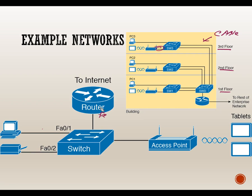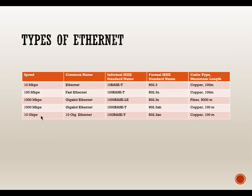We're connecting various devices: a wired computer, an access point, a printer, and then connecting to a router via Fast Ethernet. We have what we call an Ethernet network even though we're really using Fast Ethernet. The true Ethernet is a 10 megabit per second connection, with the informal IEEE name 10BaseT.